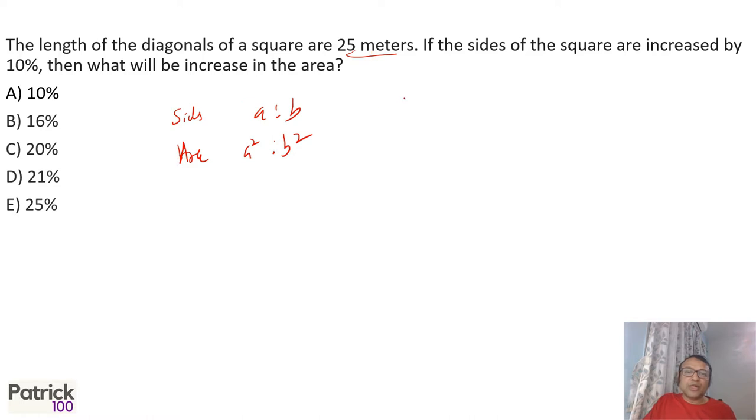So in this case both are squares, so both are similar. The ratio of the side, if the original side is 10, let's say 10x with the diagonals, the new side will be 11x because it increased by 10%. When your answers are given in percentage, the value is not important.